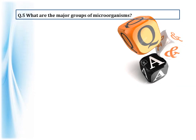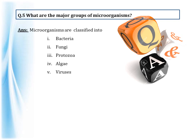Question number five: what are the major groups of microorganisms? Microorganisms are classified into five groups: bacteria, fungi, protozoa, algae, and viruses. These five classifications were discussed in detail in part one of chapter two, microorganisms friend and foe. If you have any doubt, please refer to the video of part one.